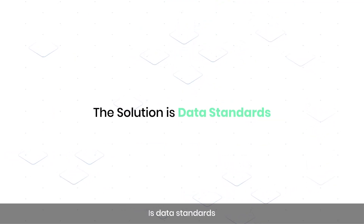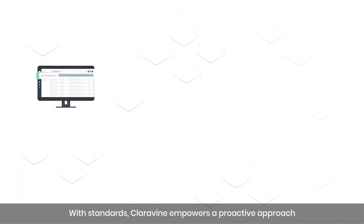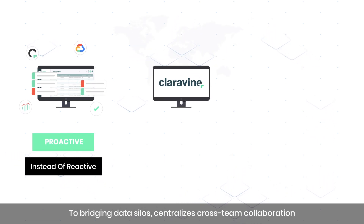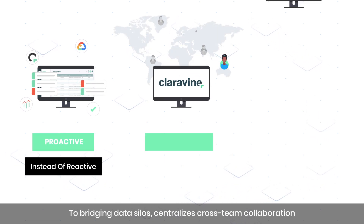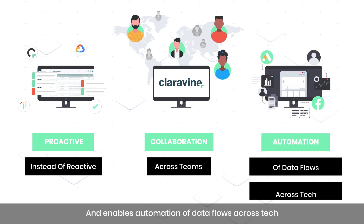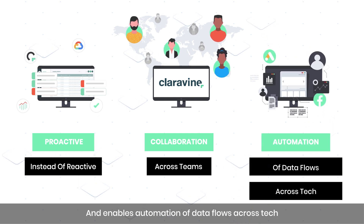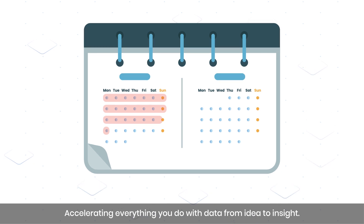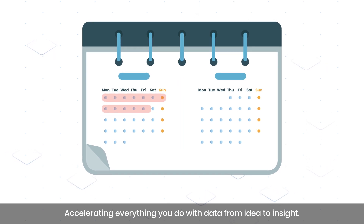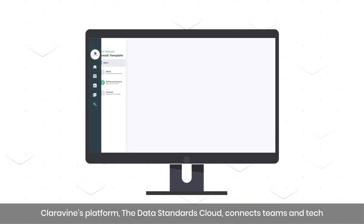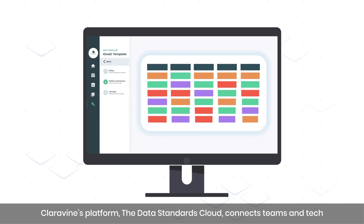The solution is data standards. With standards, Clarivine empowers a proactive approach to bridging data silos, centralizes cross-team collaboration, and enables automation of data flows across tech — accelerating everything you do with data, from idea to insight.